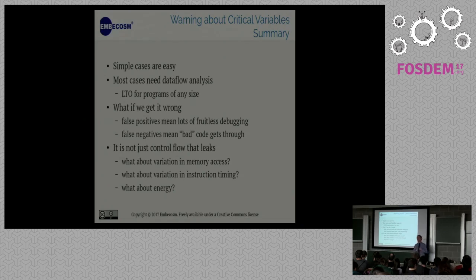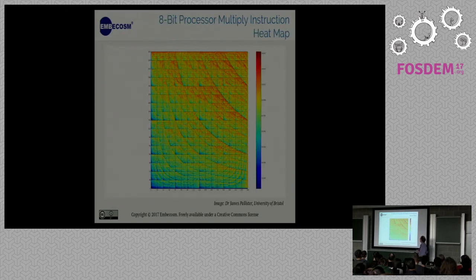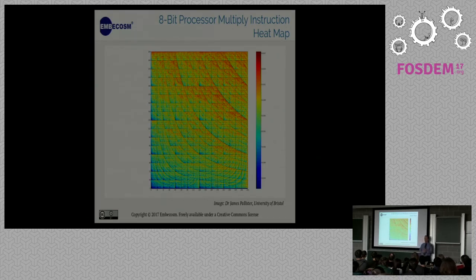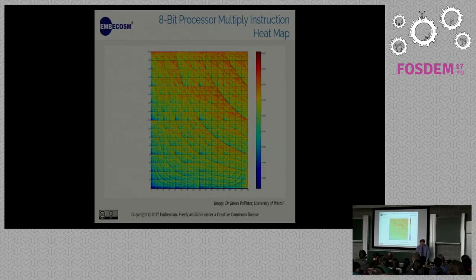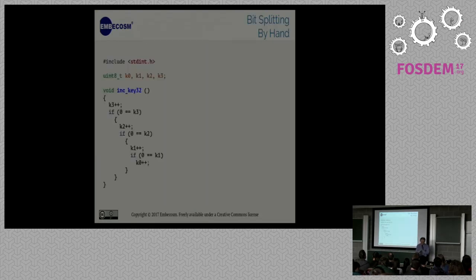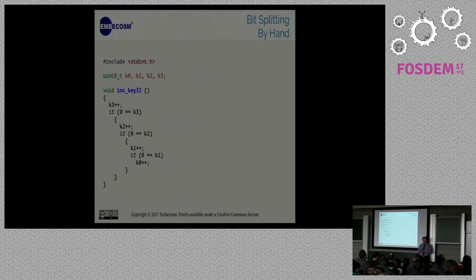It depends on the case. If this is a very security sensitive thing then you want all the false positives. Certainly for the immediate term I think we're going to try to err on that side. It's worth bearing in mind it's not just control flow that leaks. Variation in memory access, variation in instruction time. And don't forget energy. Here's a graph from James Pallister. This is a well-known 8-bit processor where we multiplied every pair of 8-bit numbers using their multiplier instruction and measured how much energy it used. From this you can see they've implemented a 4-bit booth multiplier. If I'm writing secure code using multiply, the values going in are going to leak information.